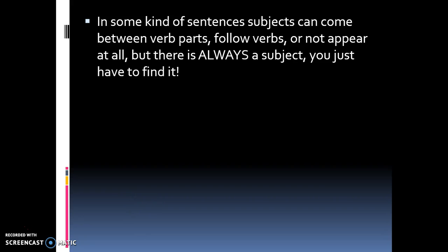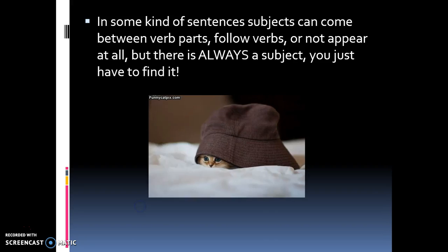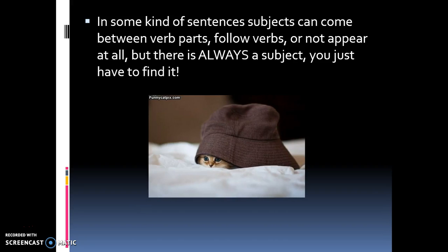In some kinds of sentences, subjects can come between verb parts, follow verb parts, or not appear at all — but there is always a subject, always. You just have to find it. Just like you have this cute little kitten hiding under the hat — wouldn't it be fun to find the kitten? Of course it would, just like it's fun to find the subject.